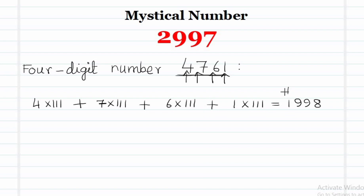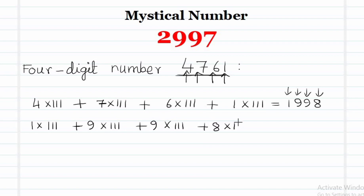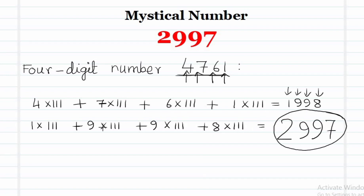The digits of 1998 are 1, 9, 9, and 8. If we multiply each of these digits by 111 and add all the terms — 1 into 111, 9 into 111 twice, and 8 into 111 — we get 2997 as expected. Here, only 2 steps are required to reach 2997.